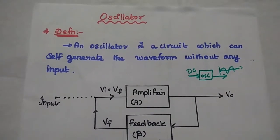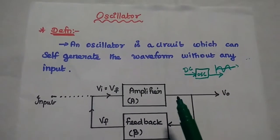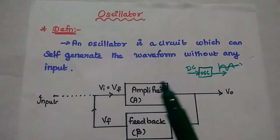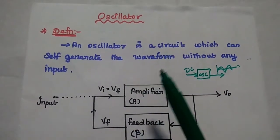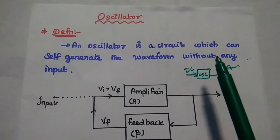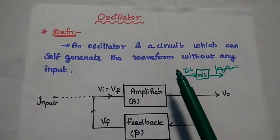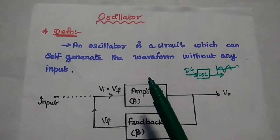Dear students, now we are going to discuss the basics of oscillator. Let's start with the definition. It is an electronic circuit which can self-generate the waveform without any input.